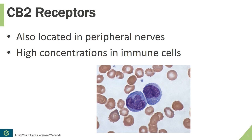As for CB2 receptors, these are also located in peripheral nerves and elicit a similar response to CB1 receptors, but they are also found in high concentrations in immune cells. Immune cells refer to the immune system — including organs with immune responsibilities such as lymph nodes and the spleen, as well as white blood cells. In this picture of a blood smear, the small red circles are red blood cells, and in the middle are two white blood cells called monocytes — one of the types of white blood cells with a significant number of CB2 receptors.